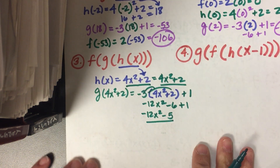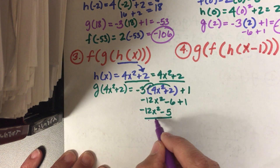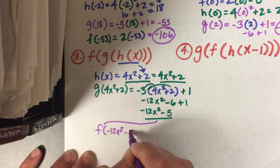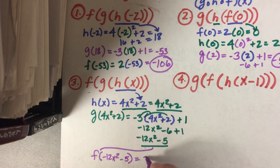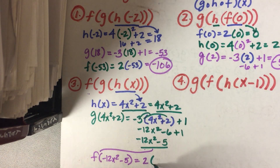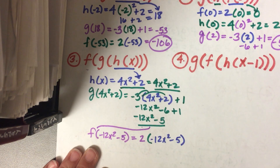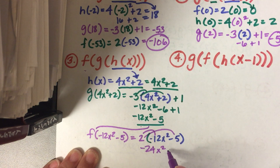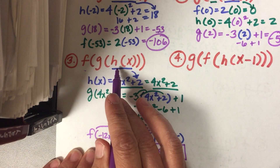That is my second value. Now I'm going to plug that into f. f of negative 12x squared minus 5: f of x is 2x, so 2 times my input, which is negative 12x squared minus 5. Distributing: 2 times negative 12x squared is negative 24x squared, and 2 times negative 5 is negative 10. That is my final answer — that is what we get when we take f of g of h of x.